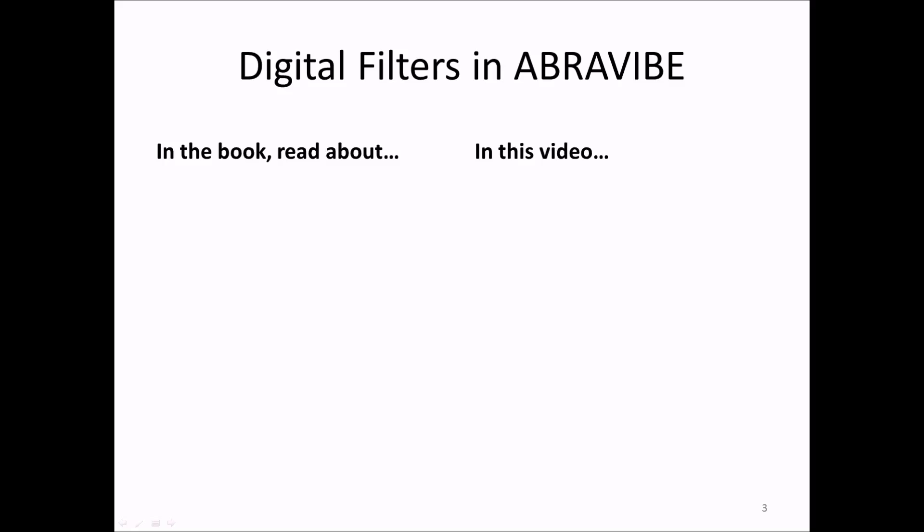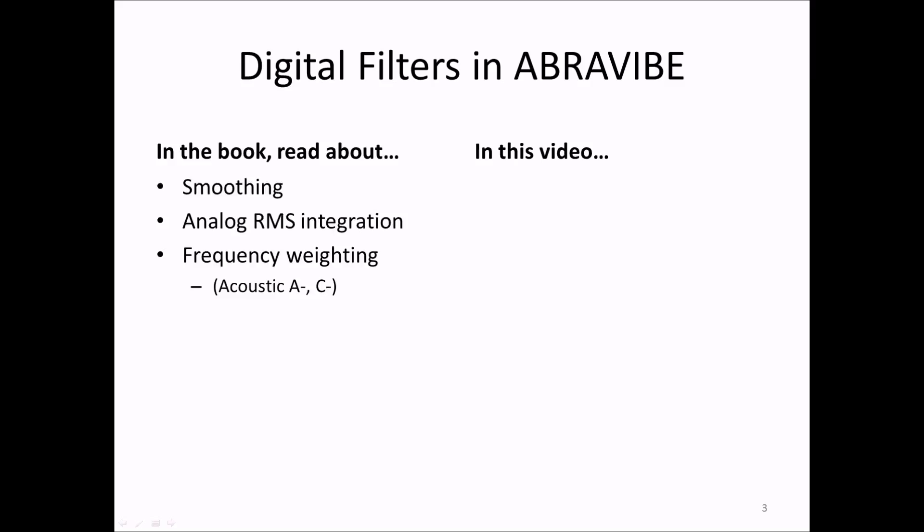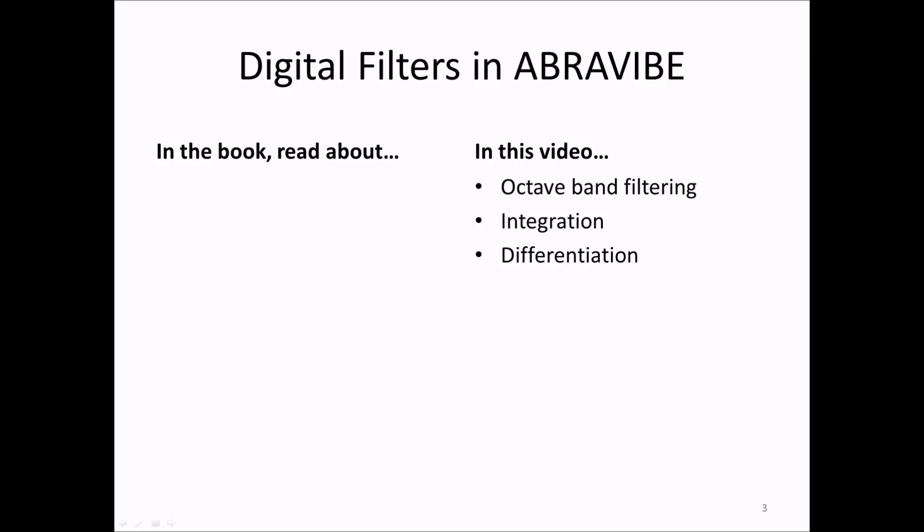We are not going to cover all the content of chapter 3 here. You should read in the book about smoothing filters, analog RMS integration, and frequency weighting — for example, time domain acoustic A and C weighting filters. There is support for all these types of filters in the Abravibe toolbox. In this video we will focus on octave band filtering, integration, and differentiation.